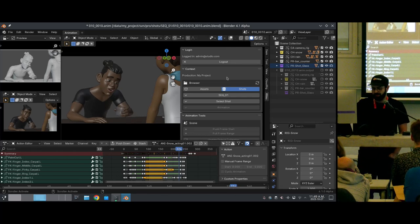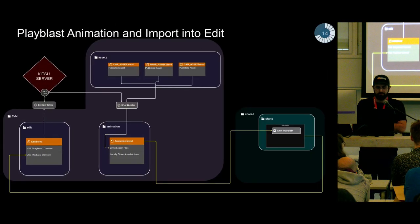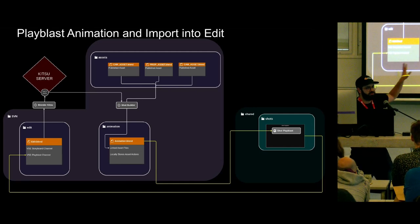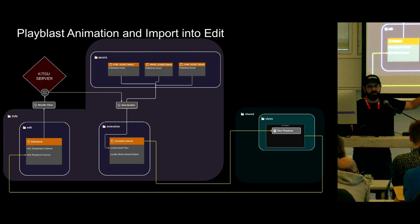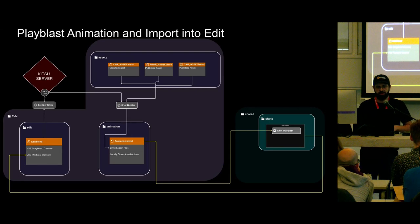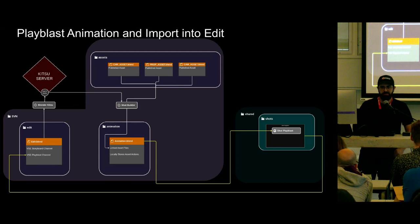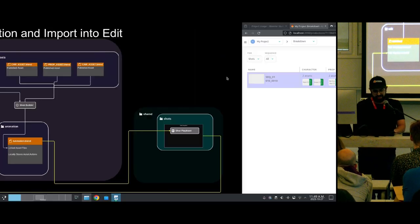The purple area on the left represents the SVN directory where all the blend files live, and the dark green area on the right represents the shared directory where all the larger files live. What's going to happen is we want to create a play blast — a preview of our animation — and render it to the shared directory. Then, because this is all about the editorial workflow, we're going to load that all the way back into our edit file so we can preview it in the context of our movie's edit.